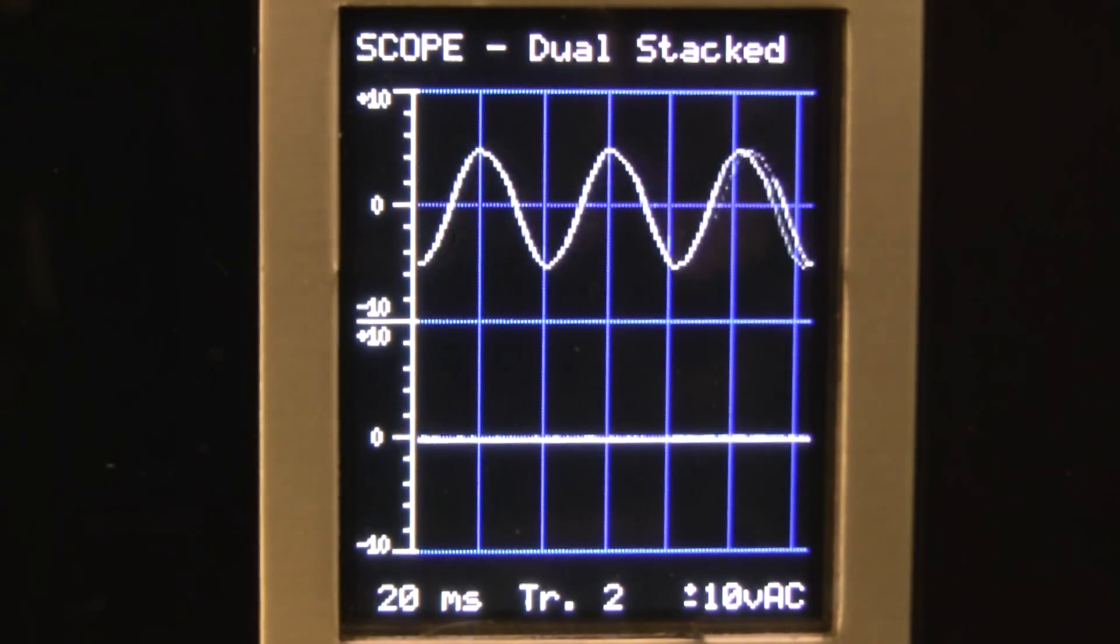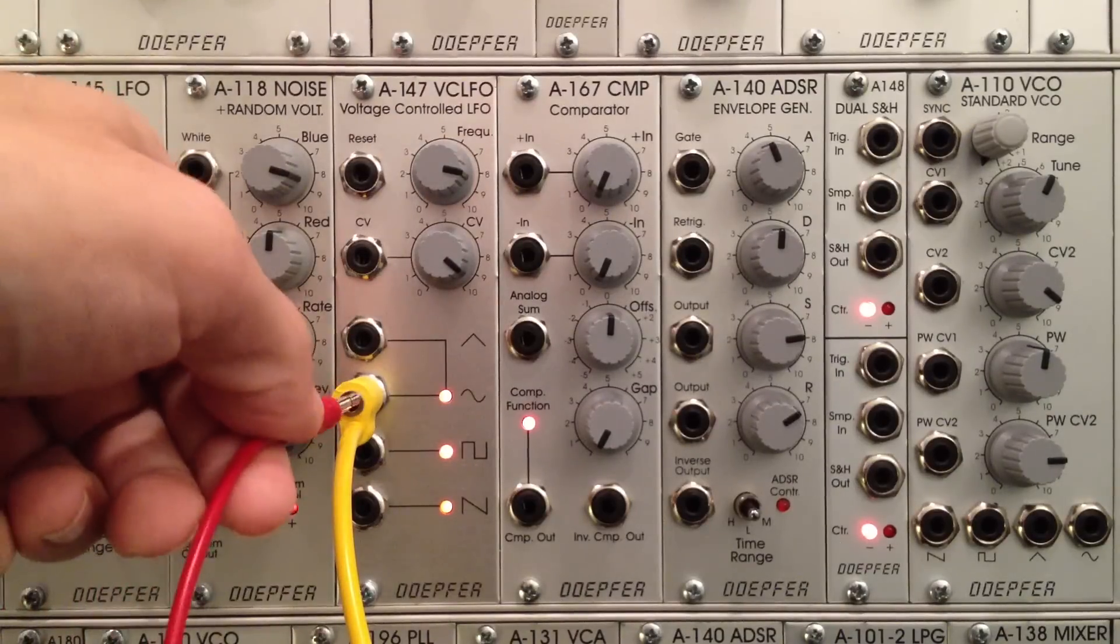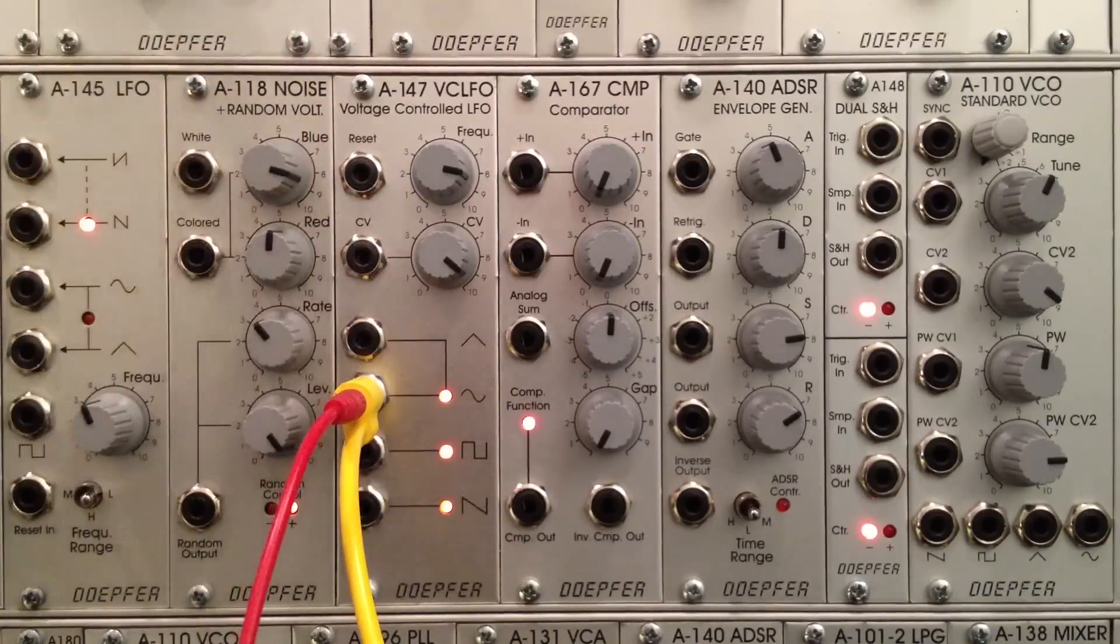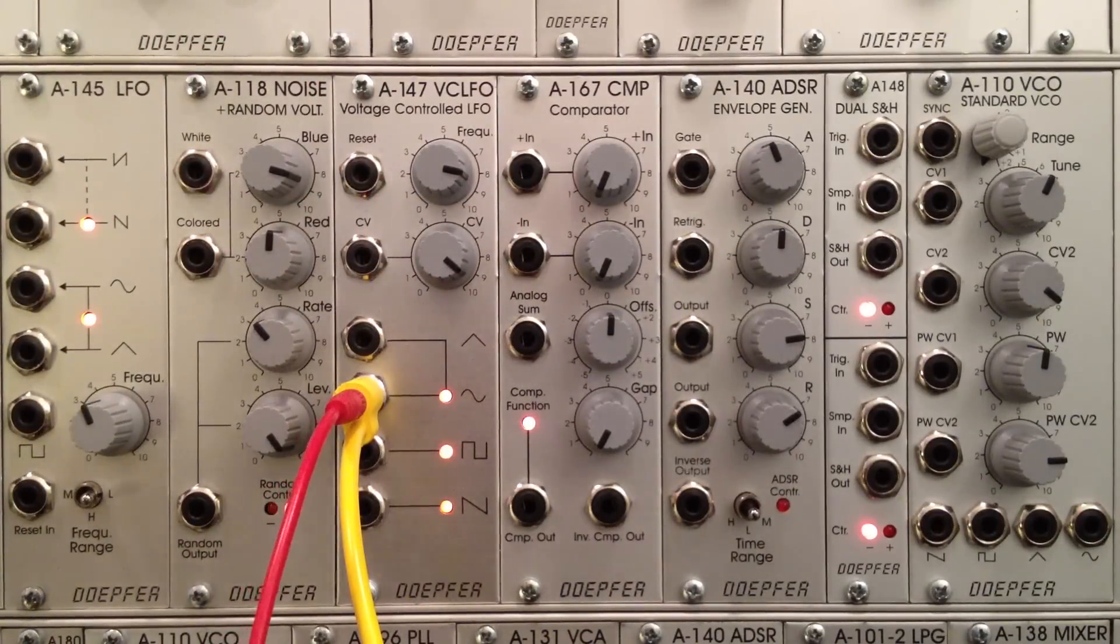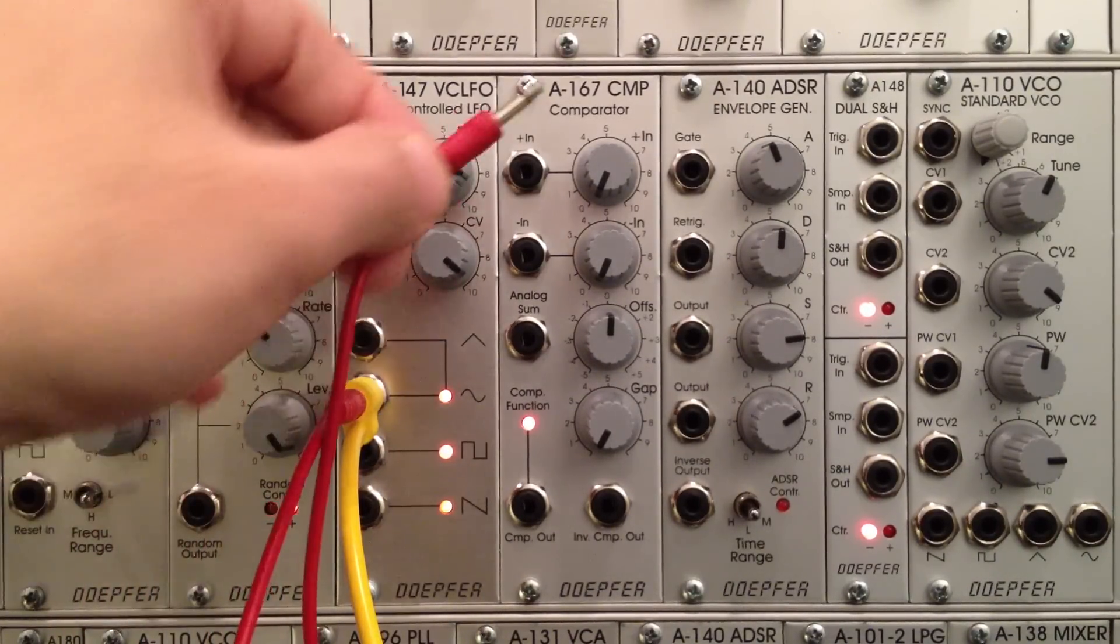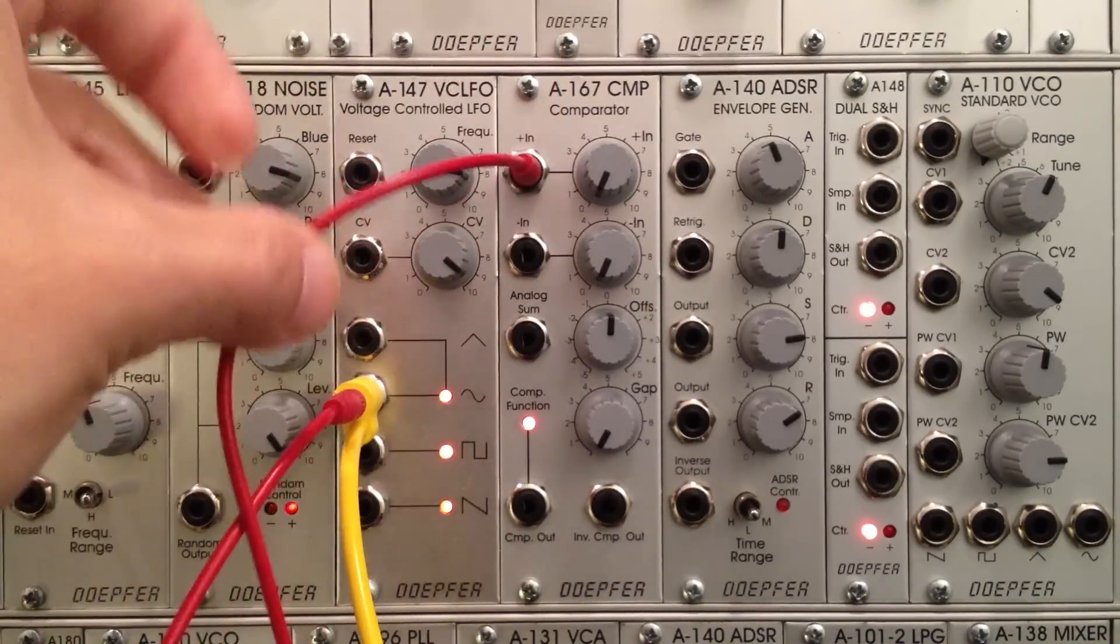So now if we go back to the A147, I'm going to actually just patch right into the back of this cable and this is actually going to give me a sine wave again right out of this cable. And I'm going to patch this into my plus in input right here of my comparator.